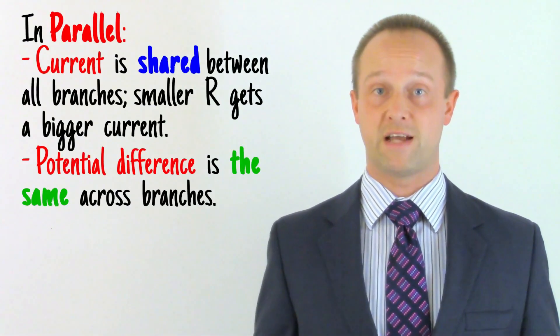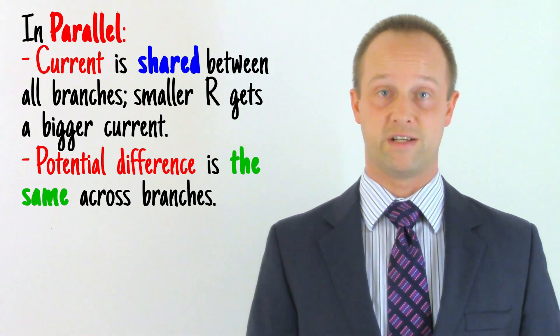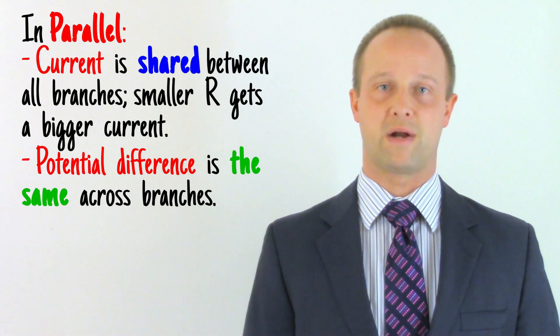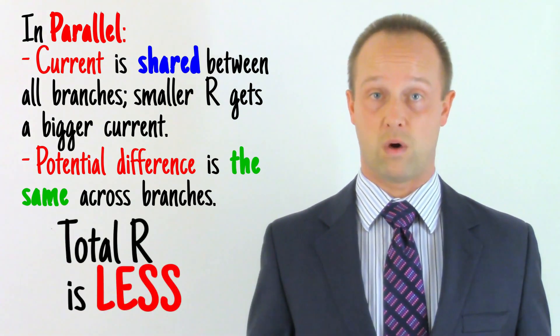In parallel, the potential difference is the same across the branches, the current is the thing which is shared, and the total resistance of all the branches is always smaller than the smallest resistance of any one branch.